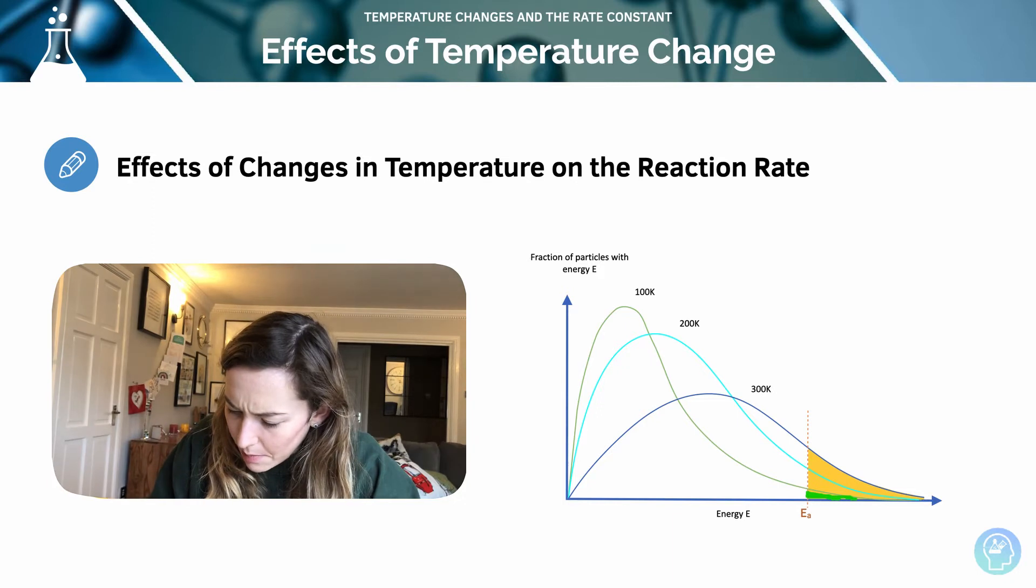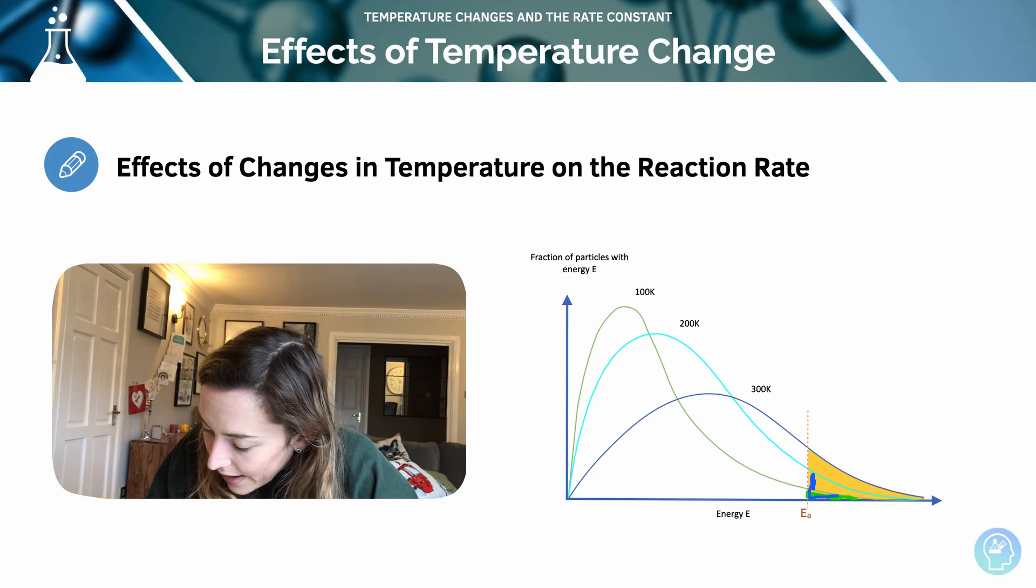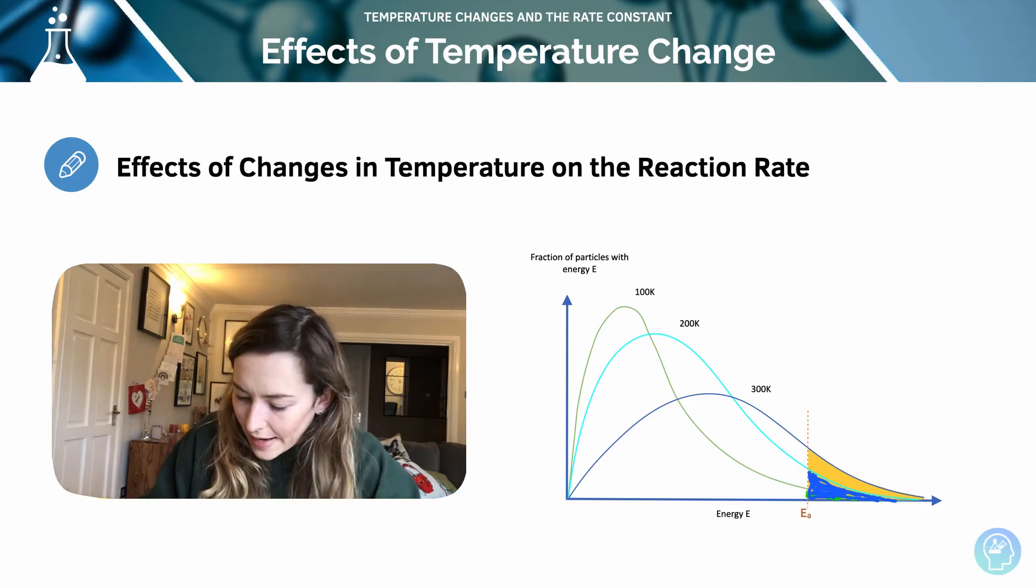When I get to this curve here, my 200K, I get a larger proportion, so now I have all of these particles underneath that have at least the activation energy or above in order to be able to react. When I get to my final curve, this one here, the 300K curve,